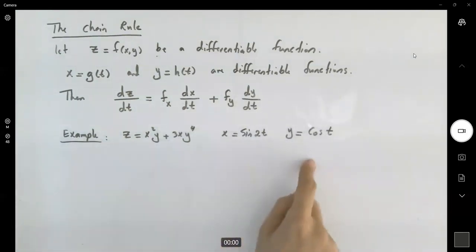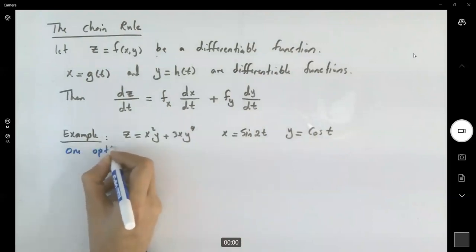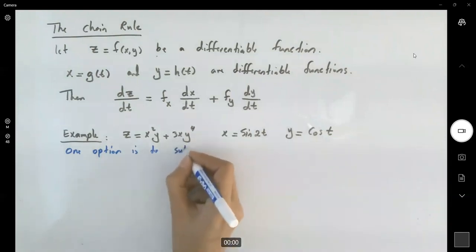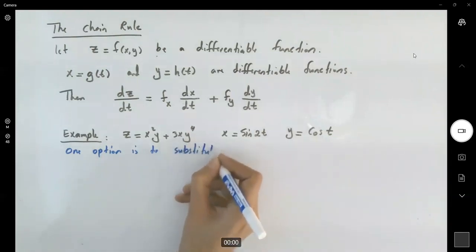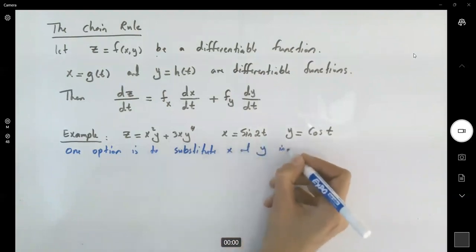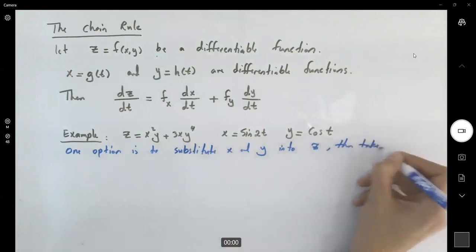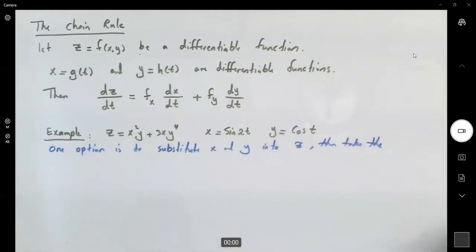So here you might say that I want to take the derivative of z with respect to t. So I'm going to substitute these two into the function and then just take the derivative of sine and cosine and apply the chain rule we've learned before. So one option is to substitute x and y into z, then take the derivative.